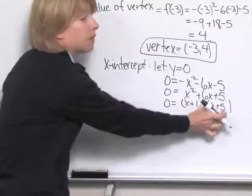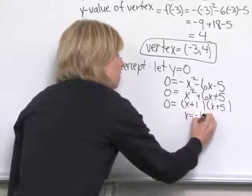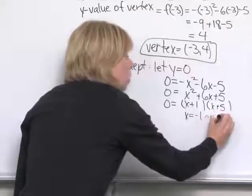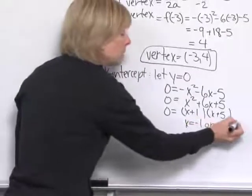And if I set each of those factors equal to 0 and solve those, I get x = -1 or x = -5. So I have two x-intercepts.